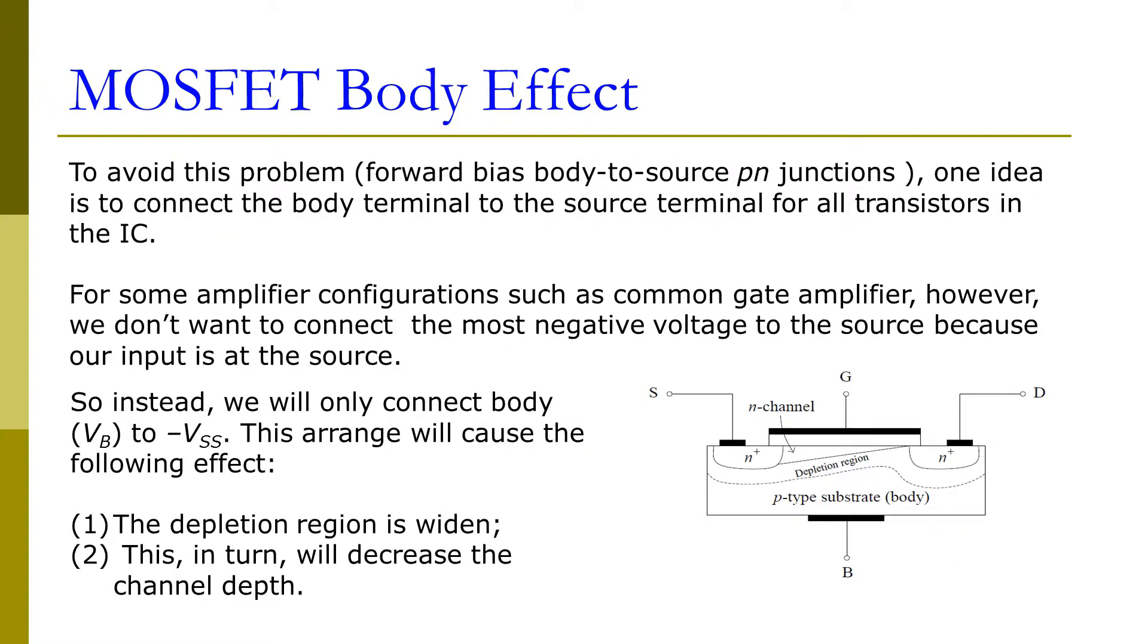To avoid the problem of forward bias of the body-to-source PN junction, one idea is to connect the body terminal to the source terminal for all transistors in the integrated circuits. That's what I mentioned - we usually connect the body to the source.